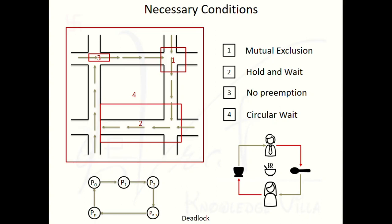Hello friends, welcome to Devrat Knowledge Villa. You are watching our English video series of operating system and learning deadlock. Today's topic is necessary conditions to occur the deadlock — deadlock characterization. In terms of deadlock characterization there are three topics: first, necessary conditions to occur the deadlock; second, resource allocation graph; and third, deadlock handling strategies. Today we will discuss necessary conditions to occur the deadlock.